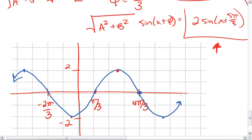And there's our equation. 2 sine x plus 5 pi thirds. That's it.